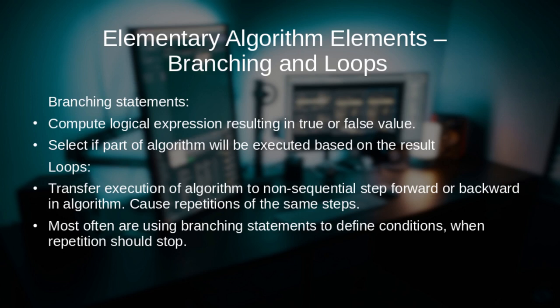Finally, we will check the condition. We will take our iteration variable and compare its value to the number of trains. If this variable is less than the number of trains, we will jump back to the label. Otherwise, we will proceed with the execution of the next instruction of the program.